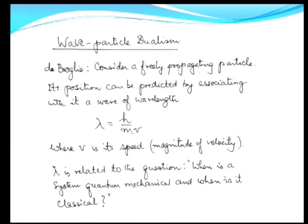A primary aspect of quantum theory was the postulate of Louis de Broglie, who said that if you consider a freely propagating particle, its position can be predicted by associating with it a wave of wavelength lambda given by h/mv, where v is the speed of the particle, m is its mass, and h is Planck's constant. What you have here is a relationship between a particle in the Newtonian sense and wave motion. Particle motion and wave motion, earlier considered incompatible, are brought together by de Broglie's concept.